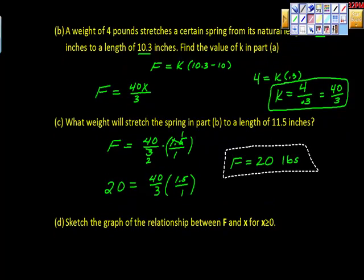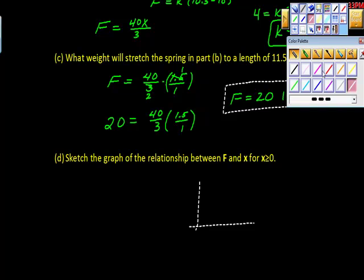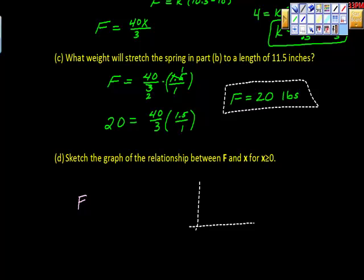The next part, and like I said before, part C and part D are the parts I think you're most likely to see in a physics or bio or chemistry class. I think they're going to assume that you know parts A and B. So go back there. What does this thing look like? Well, we have F is equal to 40 thirds X. So Y is equal to 40 thirds X.